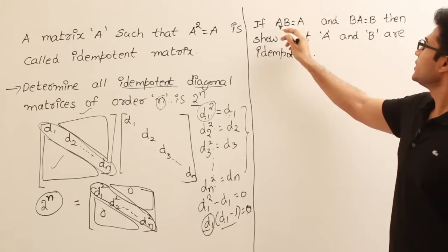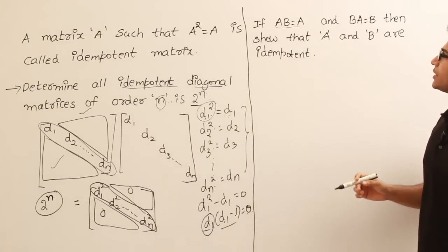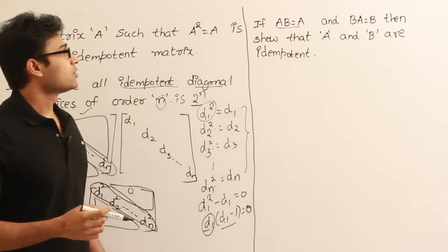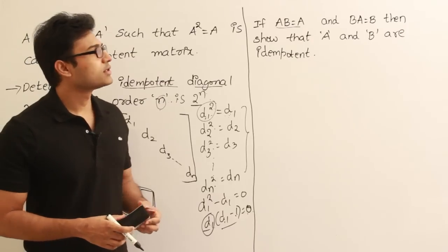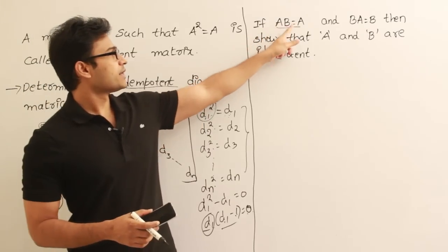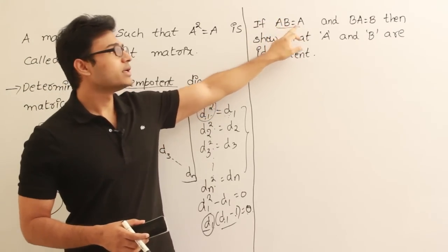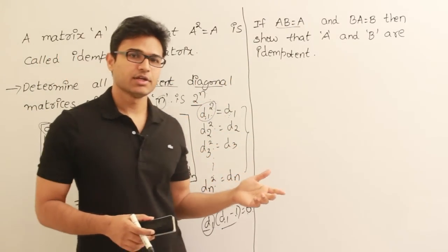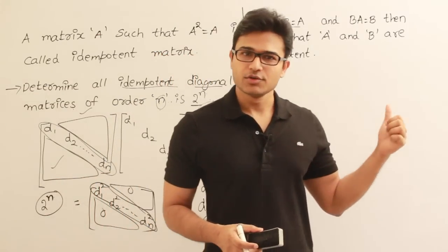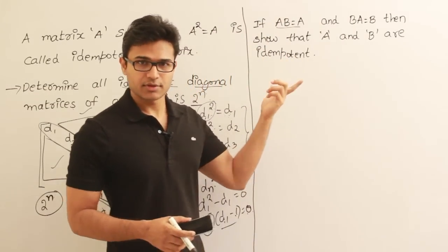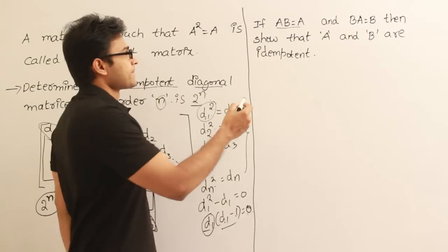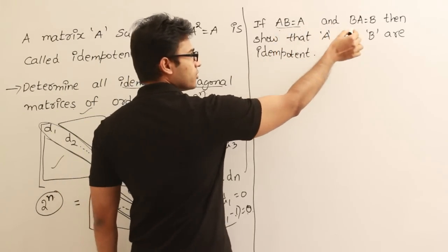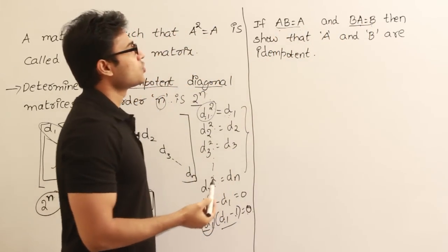The next question is: if AB equals A and BA equals B, then show that A and B are idempotent. There are various ways to solve this — we could use inverses of matrices, multiplying both sides by A inverse to show B equals I, and since every identity matrix is idempotent, we'd be done. However, since we haven't discussed inverses yet, we'll use the given facts directly. Given AB equals A and BA equals B, we need to prove A and B are idempotent.